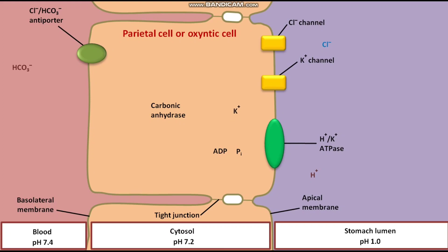This K+ ion then passes through the K+ channel and reaches the stomach lumen. The movement of Cl- ion from the cytosol to the stomach lumen is accompanied by the movement of K+ ion from the cytosol to the stomach lumen. Due to the movement of both Cl- and K+ ions, electroneutrality is maintained in the cytosol. The net result is the secretion of equal amounts of H+ ion and Cl- ion into the stomach lumen, while the pH of the cytosol remains neutral.